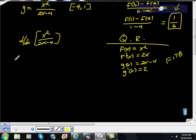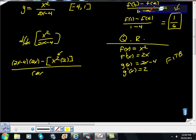It will look like 2x minus 4, g of x, times the derivative of f of x minus f of x, which is x squared, times 2. So here's f of x and this is g prime of x. Remember that it's all over g of x, which is 2x minus 4 quantity squared.